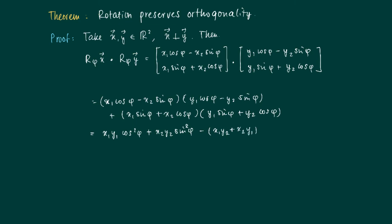Minus x1 y2 plus x2 y1, times sin phi cos phi. That's the first part.